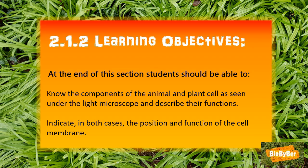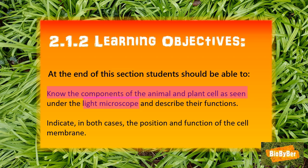You also need to indicate in both cases the position and function of the cell membrane. What does this actually mean? What are we trying to understand? You need to know the parts of the animal and plant cell as seen under the light microscope, describe their functions, and know the position and function of the cell membrane in each cell.